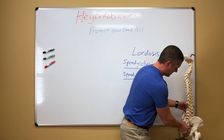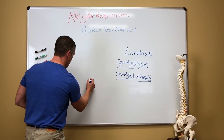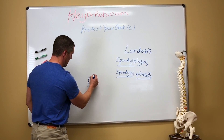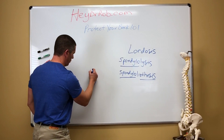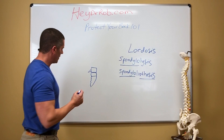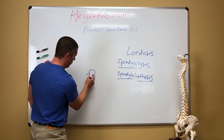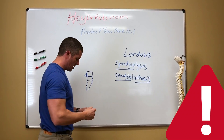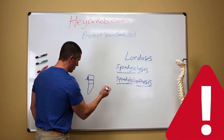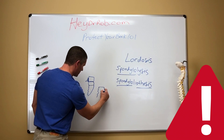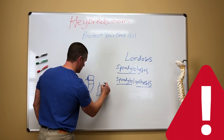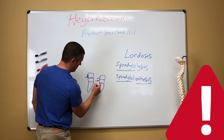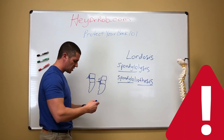If it's a spondylolisthesis, what will happen over time — here's the sacrum, a little triangular bone at the very bottom. There's a disc right here and then L5 sitting right on top. A spondylolisthesis is where L5 — because the back elements holding the bone in place have fractured — literally starts to slide forward. When it slides forward you've basically got a lot of pain. You can see that bone is displaced forward, there's a gap, and it puts pressure on the spinal cord.